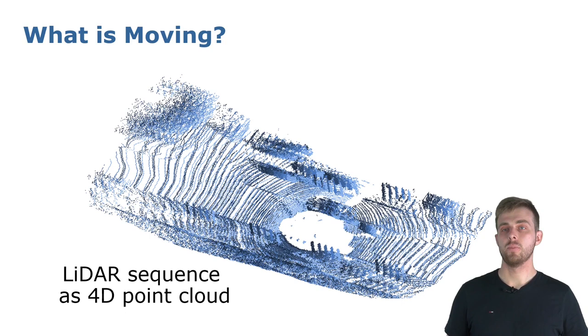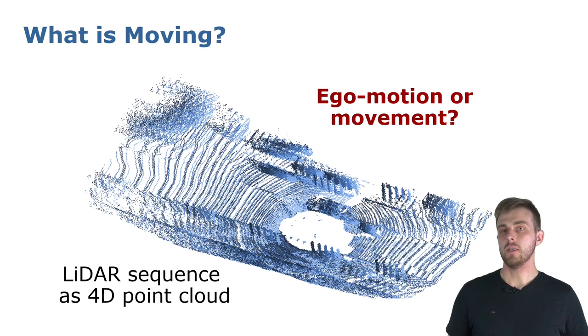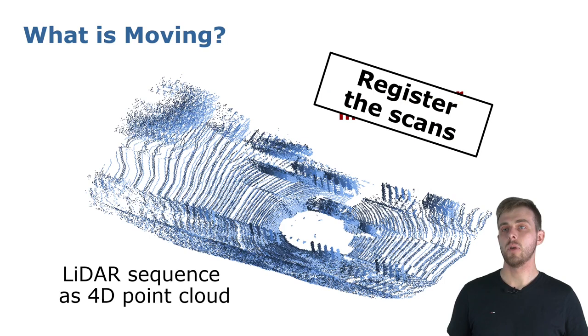But by just aggregating the past scans in the sensor frame, it is still challenging to identify moving objects, as you can see here. This is caused by the ego motion of the vehicle that makes it very hard to identify motion of objects relative to it.